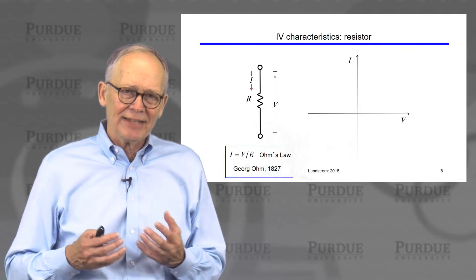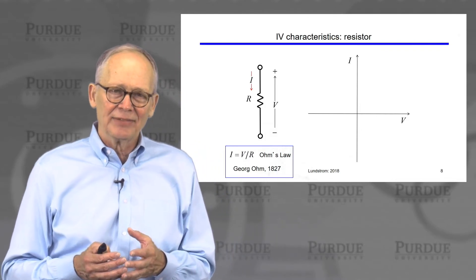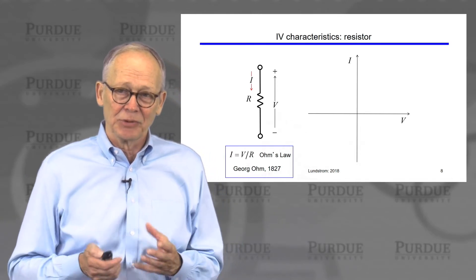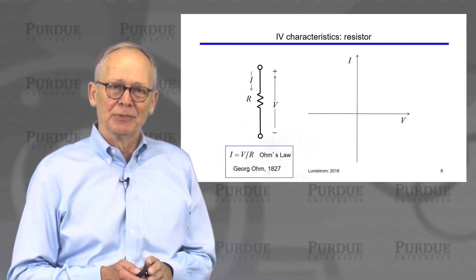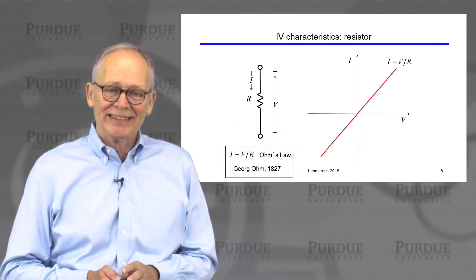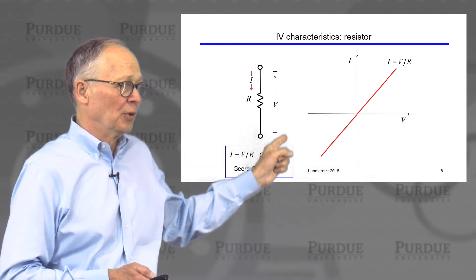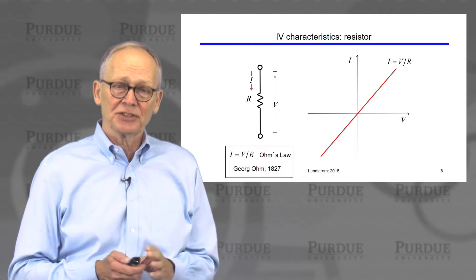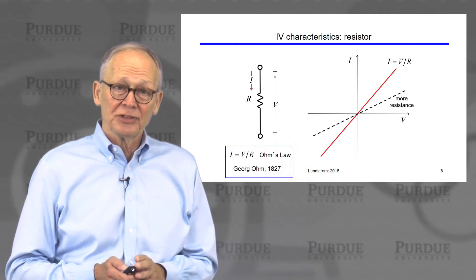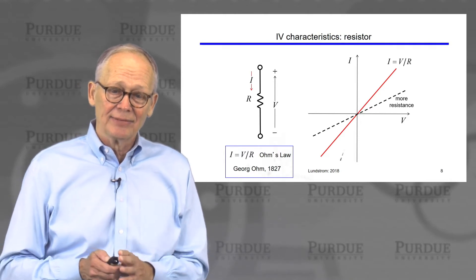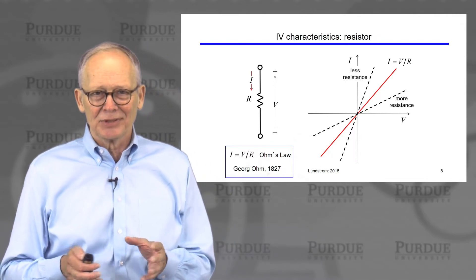To understand IV characteristics of transistors, we begin with a simple device — a resistor. Ohm's law says the current is voltage divided by resistance. If we plot the IV characteristics, the current through the resistor as a function of voltage between its two terminals, it's just a straight line: I equals V over R. More resistance gives less current; less resistance gives more current.